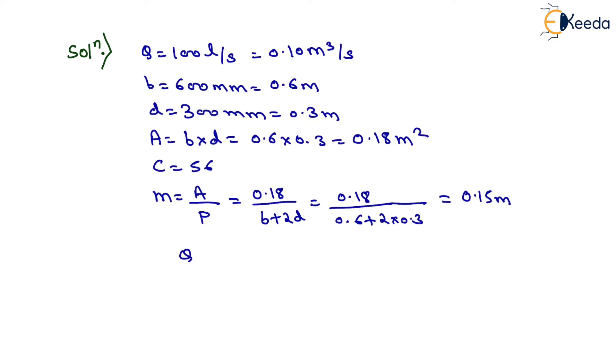Now we use the equation Q equals AC times square root of MI. Q equals 0.10, area is 0.18, so 0.10 equals 0.18 times 56 times square root of 0.15 times I. On solving,